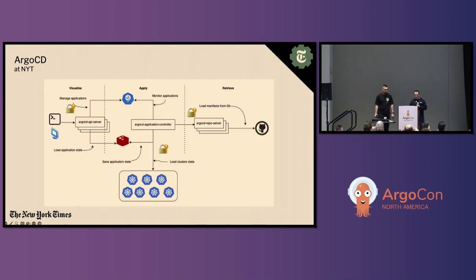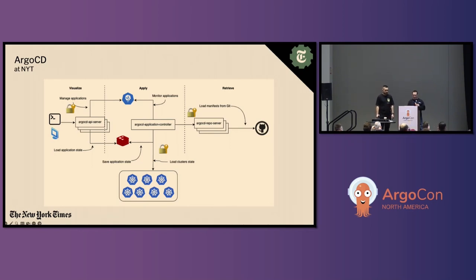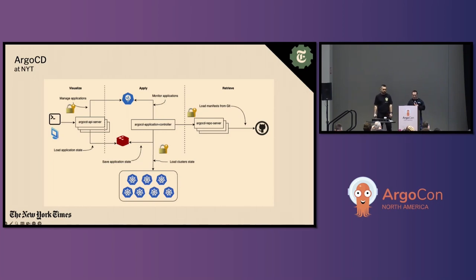Let's look at the component view of Argo CD. There exist three phases — the visualize, the apply, and the retrieve. Each phase presents different security challenges within your Argo CD configuration: who can visualize, what gets applied to which destination, and what is retrieved from which source.